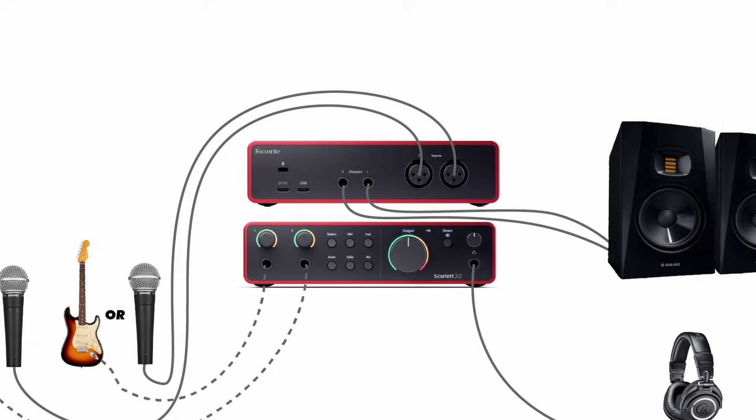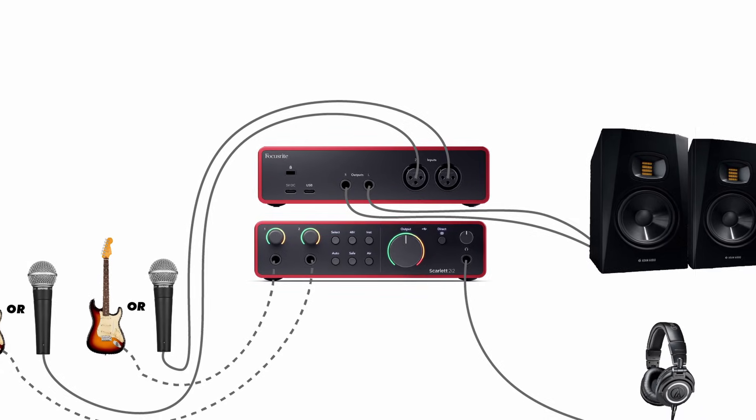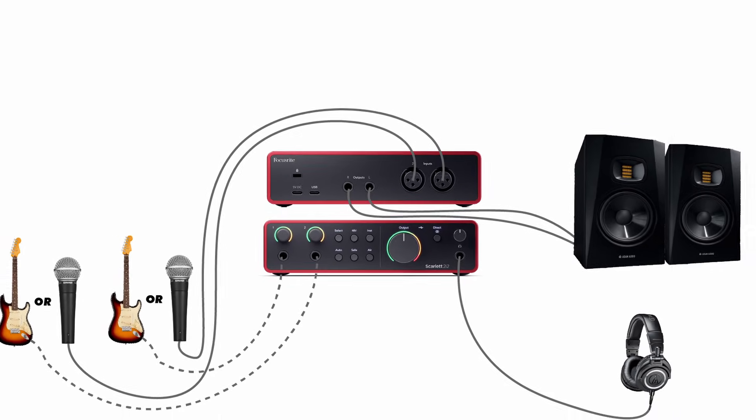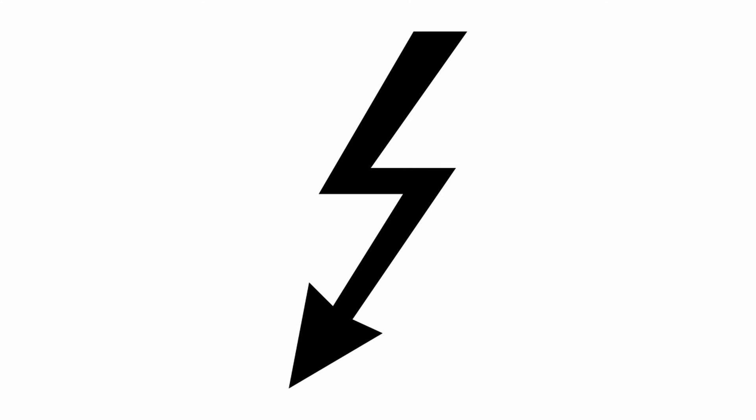The very first step is to set up your audio interface, which is the device that connects your computer to any microphones, speakers, or headphones in your system. The connection between your audio interface and computer is usually made over either USB or Thunderbolt. In order for the interface to work optimally, you should check to see if there are any drivers available for your interface.